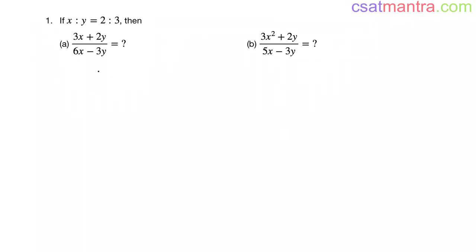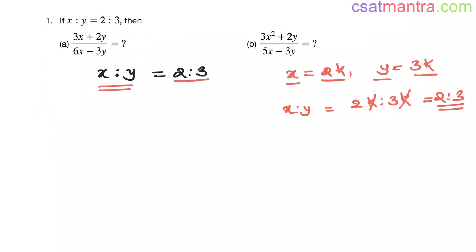Friends, whenever a ratio like x:y equals 2:3 is given, it always means—I'm telling you always, there can be no other form—it means x is in the form 2k and y is in the form 3k. Now see, the x:y ratio, that is 2k:3k, k gets cancelled, and they are in the ratio 2:3. So x=2k, y=3k always holds. This is the only meaning of x:y equals 2:3.